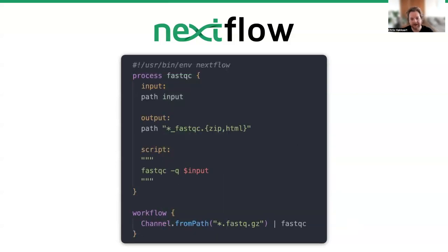Here is a simple example of what a single-process pipeline might look like in Nextflow. At the top, we have a process block named FastQC. We've given it an input — in this case a path — and an output, which is a path to the FastQC zip or HTML file. Down the bottom, we have a script block which is the actual execution of the FastQC tool. The workflow block has a channel bringing in the FastQ files, which we pipe into the FastQC process. It's a simple singular-process workflow showing that the language has clear definitions of inputs, outputs, and a script block.